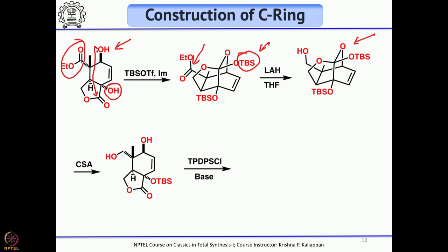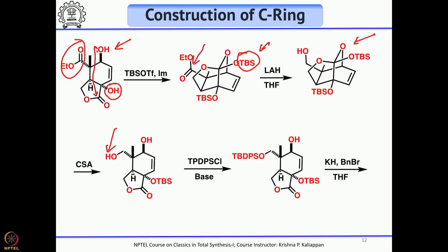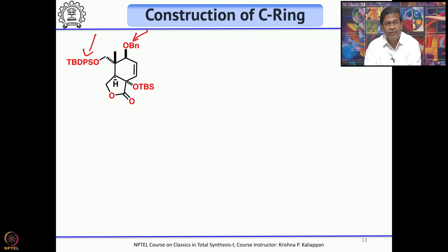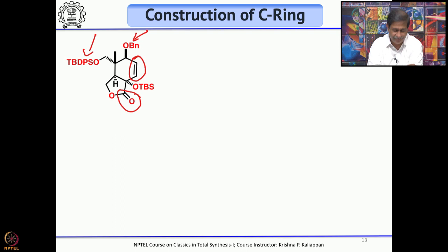The primary alcohol can be selectively protected in the presence of the secondary alcohol using a bulky protecting group: TBDPS chloride was used to protect the primary alcohol as a TBDPS ether. The secondary alcohol was then protected as a benzyl ether using potassium iodide and benzyl bromide. Now, you have to reduce or open the 5-membered lactone and functionalize the double bond to a hydroxyl group.